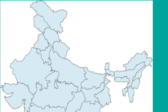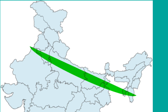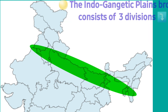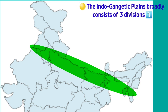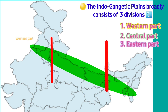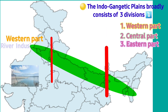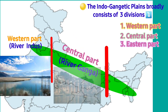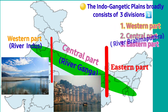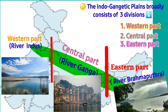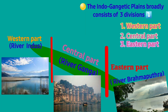The Northern Plains in India are known as Indo-Gangetic Plains. There are three divisions: Western, Central, and Eastern. In the Western part we have River Indus, in the Central part we have River Ganga, and in the Eastern part we have River Brahmaputra. That is why these plains are named the Indo-Gangetic Plains, due to the river course.